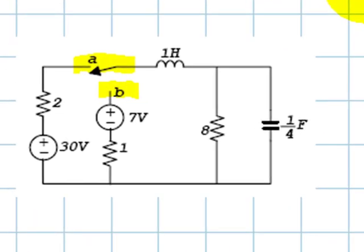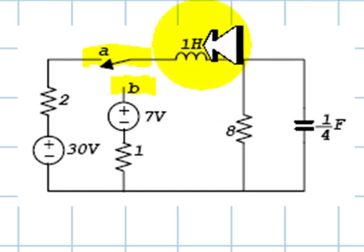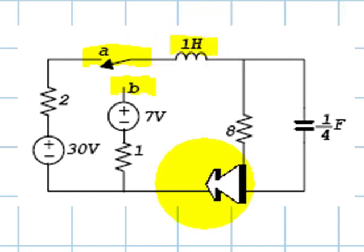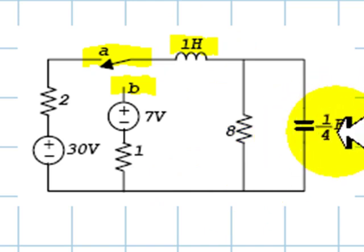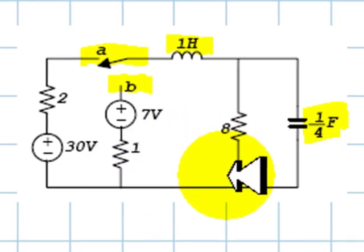We need to find a P operator representation of the circuit for t greater than 0. For that, we will represent the inductor by its impedance and the capacitor by its impedance as well. Resistor impedances are themselves.